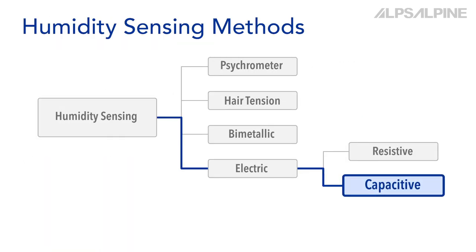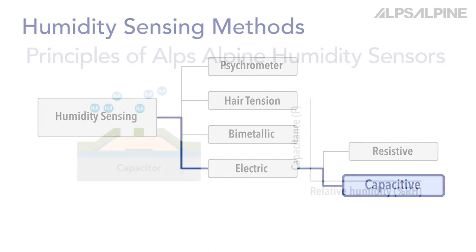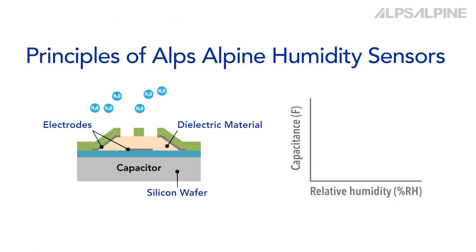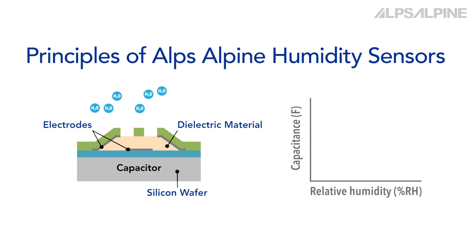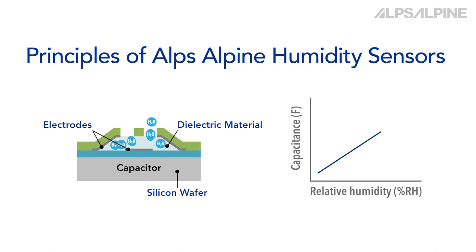Humidity sensors measure humidity in a variety of ways. AlpsAlpine's humidity sensors are electric and use change in capacitance. Capacitive humidity sensors, like AlpsAlpine's, consist of two electrodes separated by a dielectric material forming a capacitor. Humidity is measured by applying AC voltage between the electrodes and ascertaining the change in capacitance between the electrodes resulting from a change in permittivity or dielectric constant due to the absorption of moisture in the dielectric material.